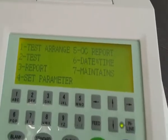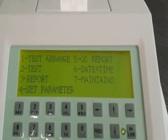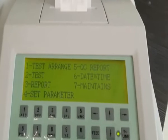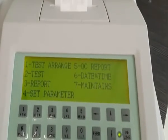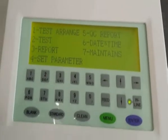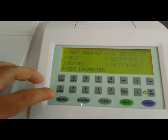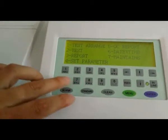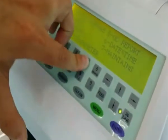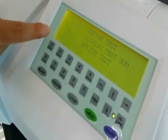When you enter the main interface, you should wait 5 minutes then start to use the machine function. First, we should set the parameter. So we choose 4 and 1.